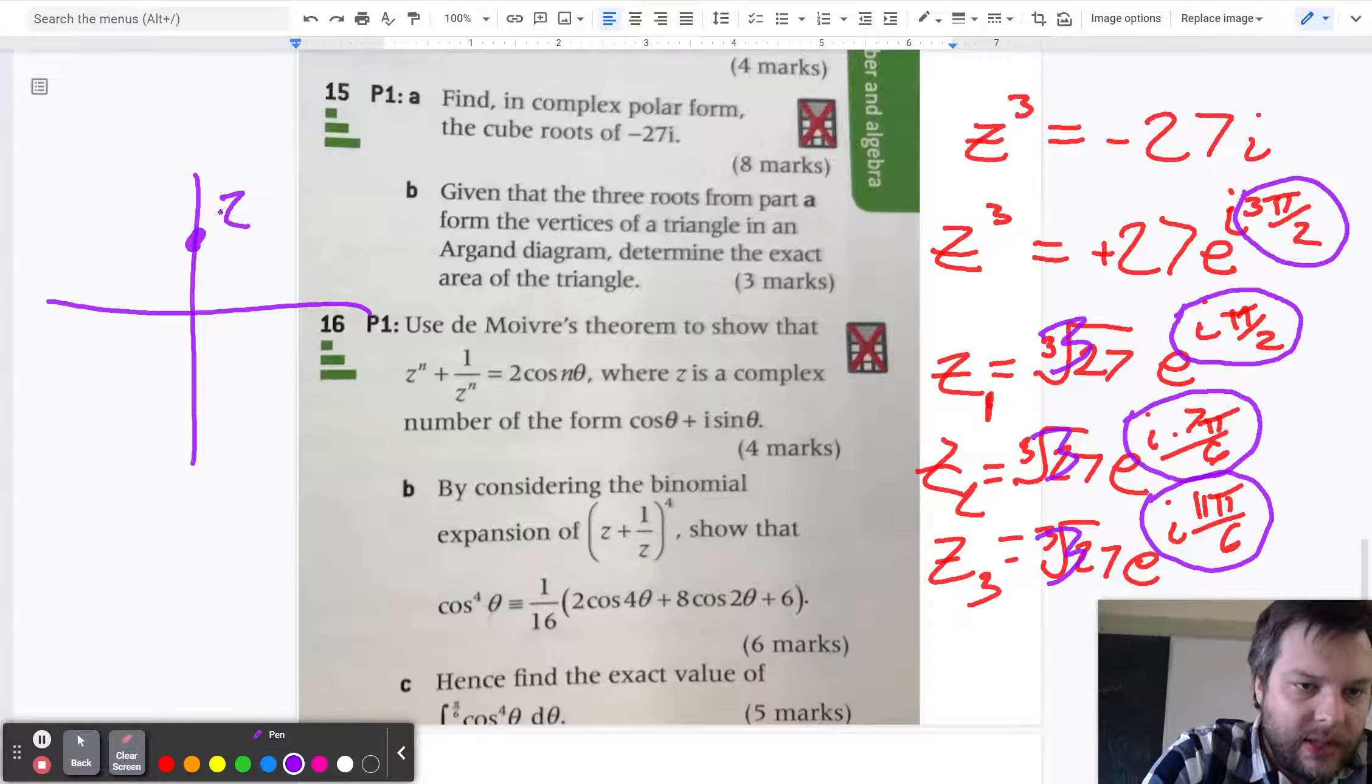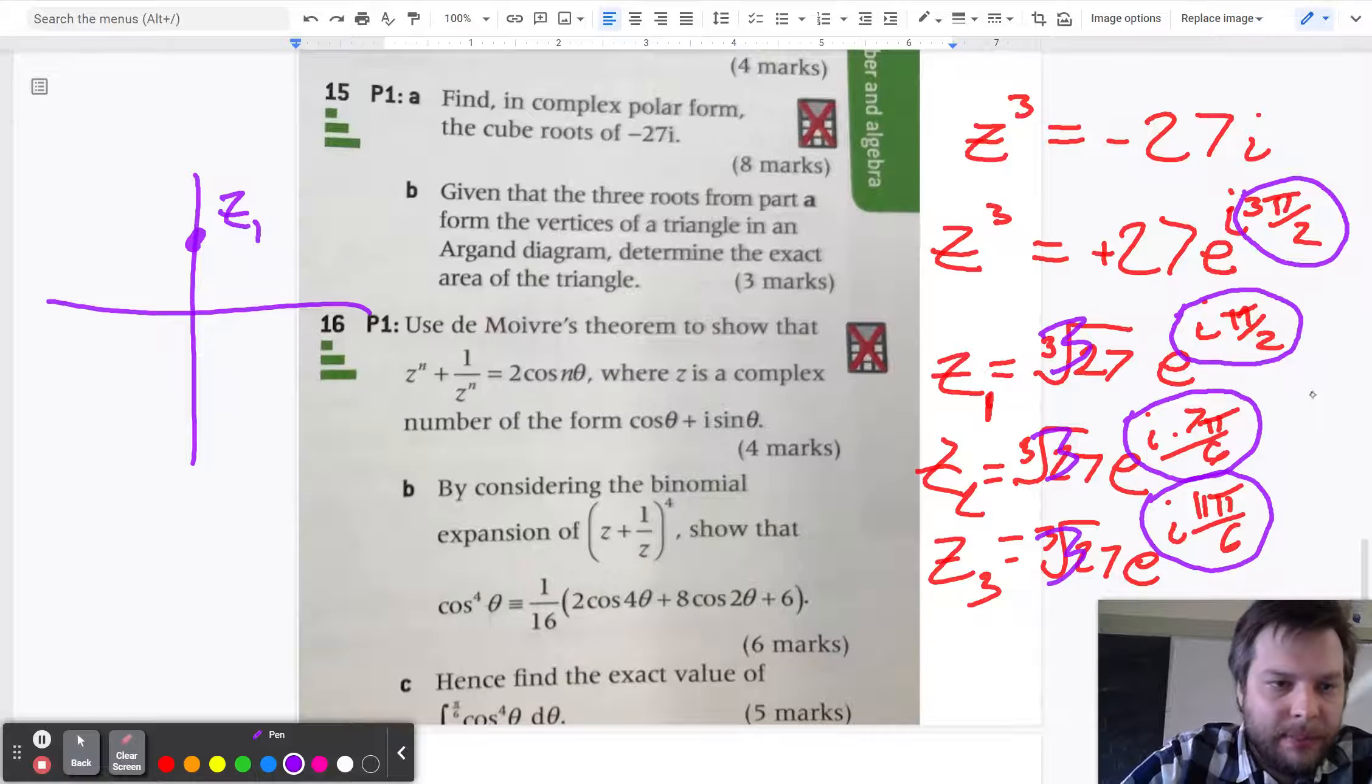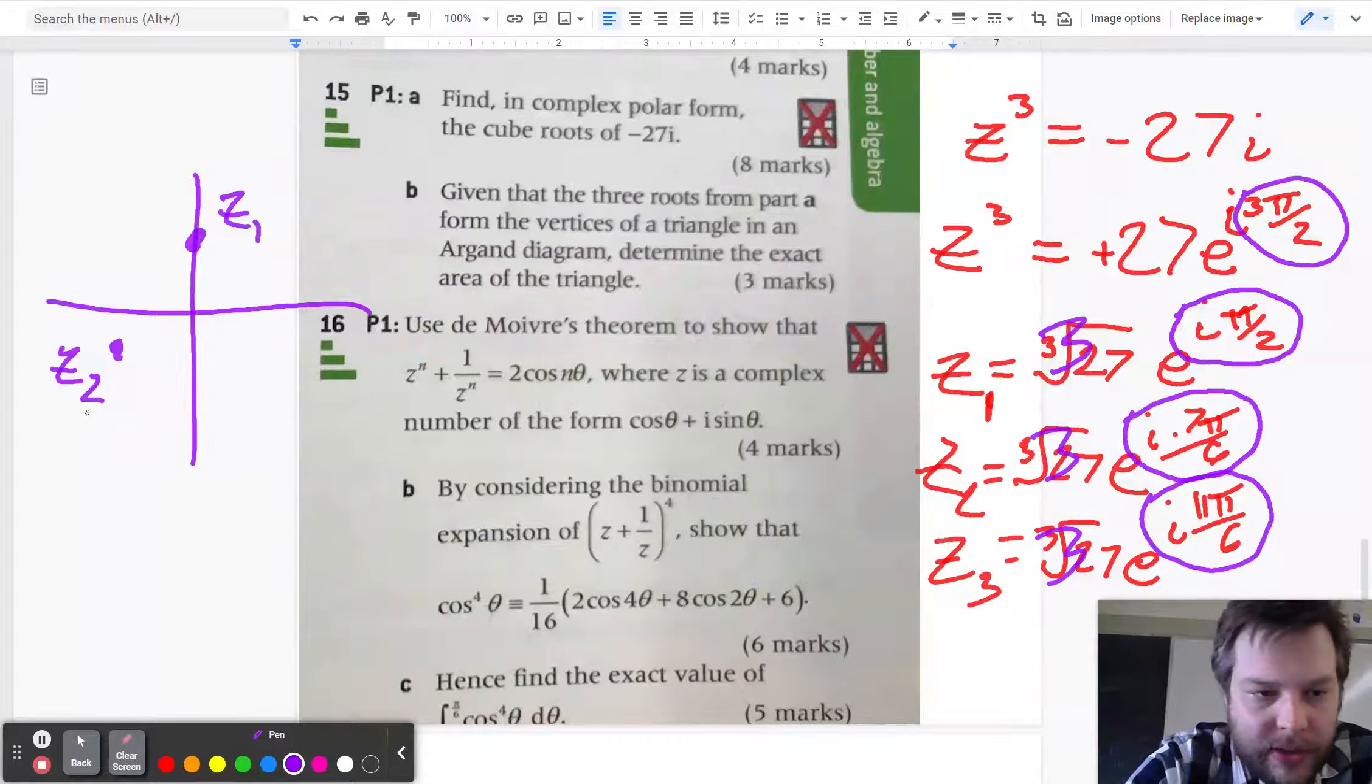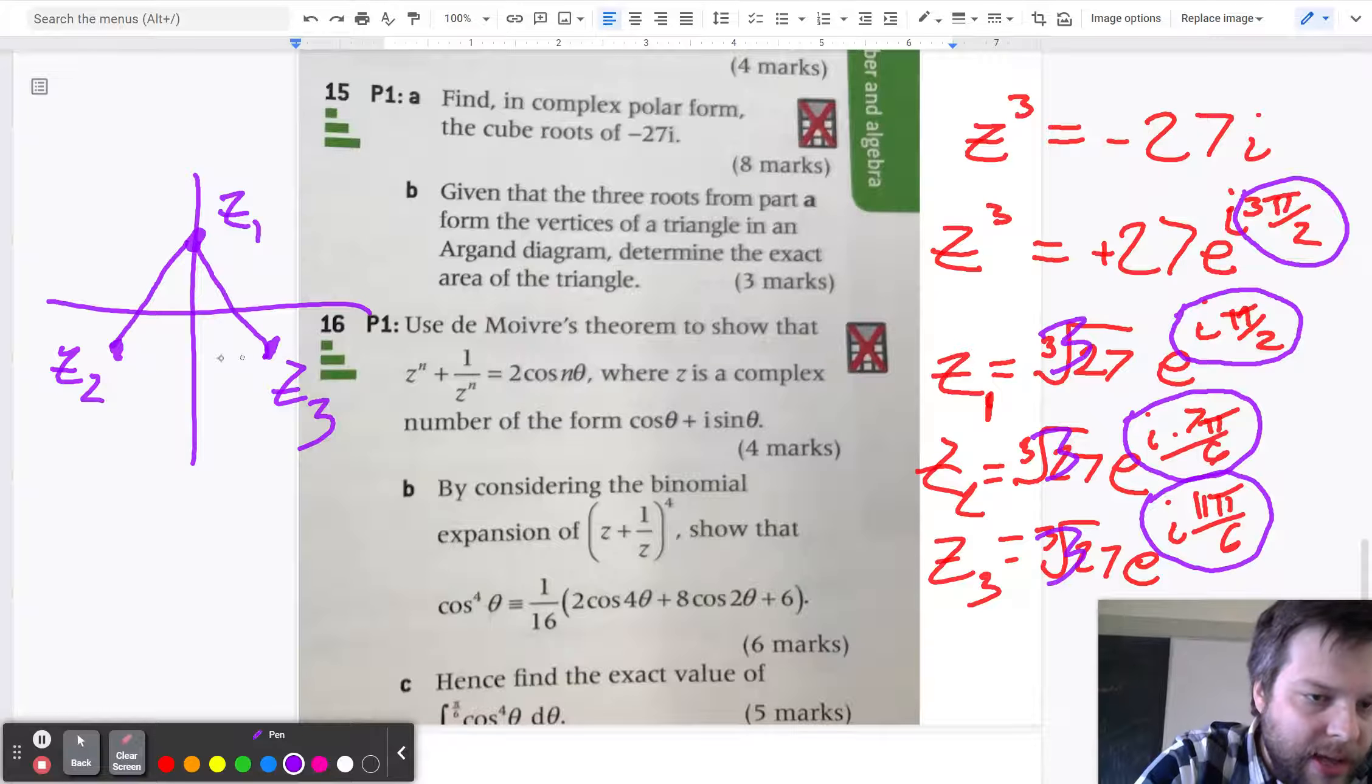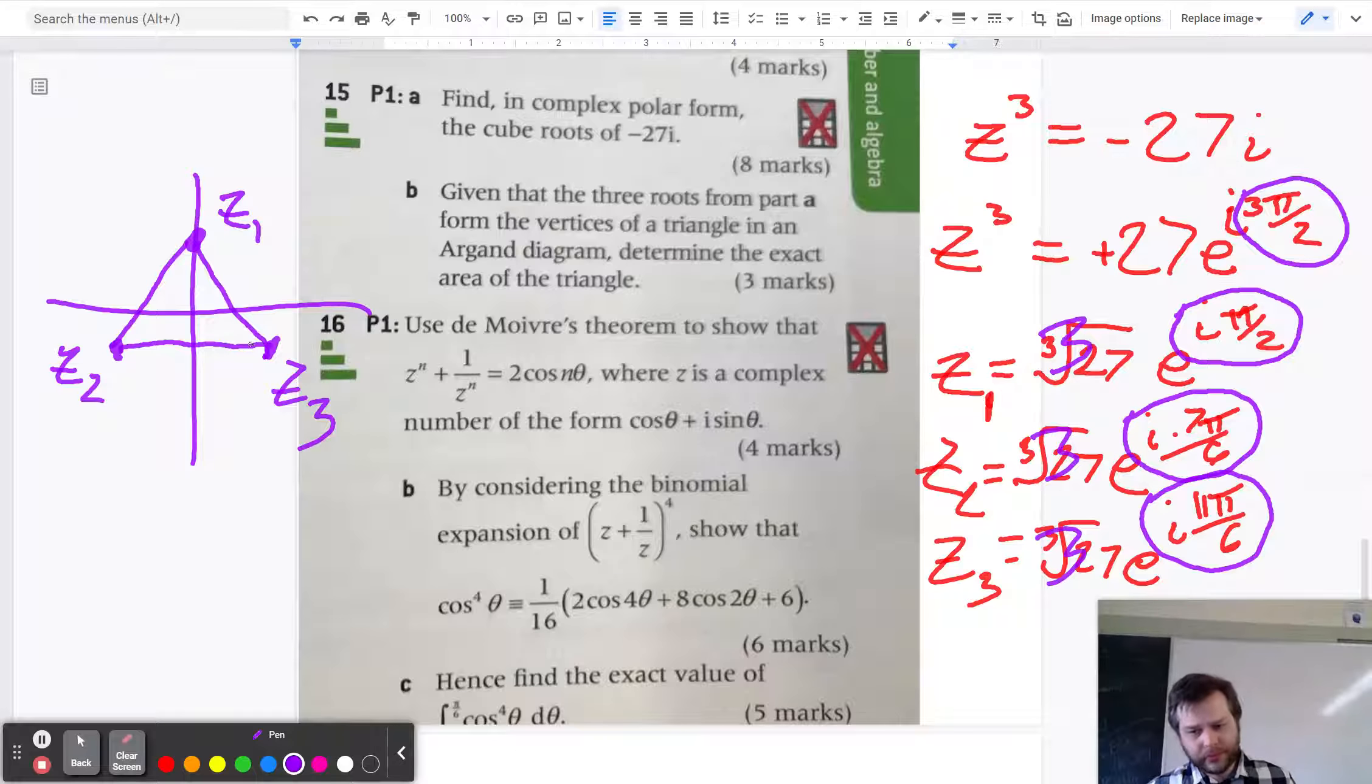So this is Z1. Z2 has an angle of 7 pi over 6. So it's just like 30 degrees past 180. So something like over here. And then Z3 is 30 degrees short of being at a full circle.